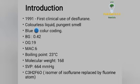The blood-gas partition coefficient of desflurane is 0.42 and the oil-gas partition coefficient is 19. The MAC value is 6, which is higher than other inhalation agents, so desflurane is less potent comparatively. The boiling point of desflurane is 23 degrees Celsius — lower than room temperature. The molecular weight is 168 and the saturated vapor pressure (SVP) is 664 mmHg, higher than other inhalation agents. The molecular formula is C3H2F6O, an isomer of isoflurane with fluorine atoms substituted.